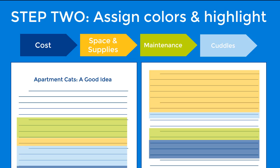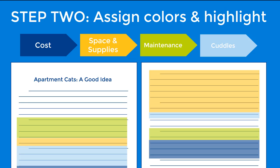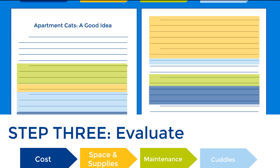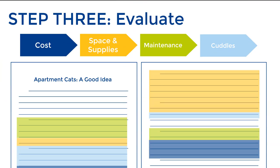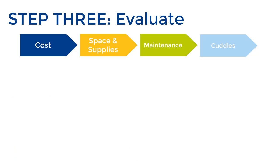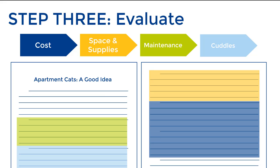Once you've finished your highlighting, take a look at your project. Where do you see the colors representing each theme? Typically, it's best for your reader if everything on one theme is grouped together into a paragraph or a section, so try putting all of the parts with the same color together.